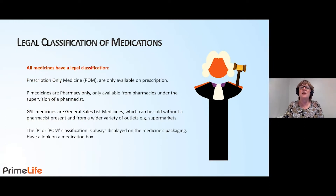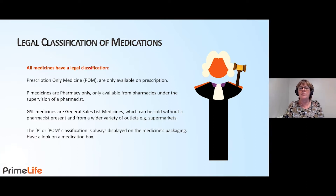Let's look at the legal classifications of medications. All medicines have a legal classification. Prescription only medication, or POM, are only available on prescription. P medicines are pharmacy only medications, available only under the supervision of a pharmacy, and they will have the letter P on the box.